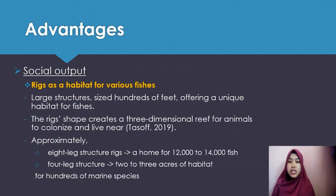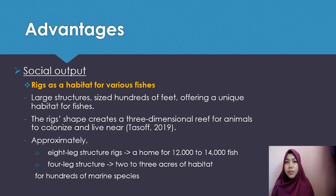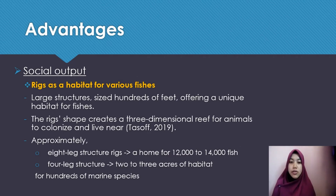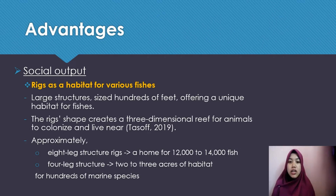The advantages of this rigs-to-reef project: first, it acts as a habitat for various fishes. Because of its large structure, sized about hundreds of feet, it can offer a very unique habitat for fishes. The rig's shape also creates a three-dimensional reef for animals to colonize and live near. Approximately eight-legged structure rigs can be home to 12,000 to 14,000 fish, while a four-legged structure provides about two to three acres of habitat for hundreds of marine species.